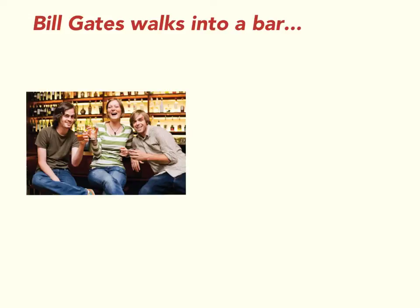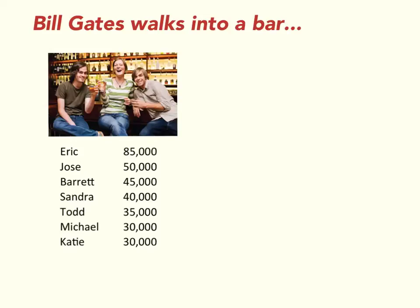The mean is what's usually used to characterize a set of data on a single variable. But there are some limitations to the mean, which are illustrated by this joke: Bill Gates walks into a bar. You have a bunch of people sitting in a bar — let's say there are seven people in the bar — and we want to calculate the average salary of the people in this bar.